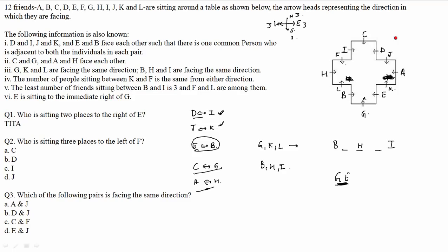Now moving to the questions. First: who is sitting 2 places to the right of E? Counting 1, 2 — the answer is A. Second: who is sitting 3 places to the left of F? F is facing downwards, so counting 1, 2, 3 — the answer is D, so option B. Third: which pair is facing the same direction? A and J face different directions; D and J face different directions; C and F both face the same direction — so the answer is C.